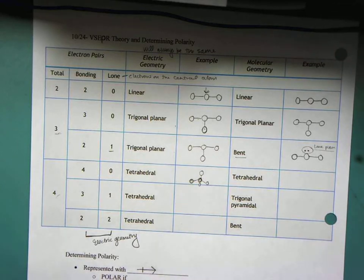So valence-shell-electron pair repulsion theory, or VSEPR, shows you that molecules will form geometries that allow the electrons to be as far apart from each other as possible, right? Because we know that electrons repel each other, and so the molecules are going to be as far apart as possible.